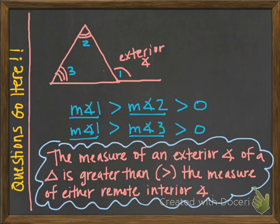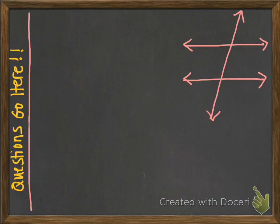Here is the theorem written out: the measure of an exterior angle of a triangle is greater than the measure of either remote interior angle. The point of this section is to prove that lines are parallel, and we can do that through some of our special angle pairs.